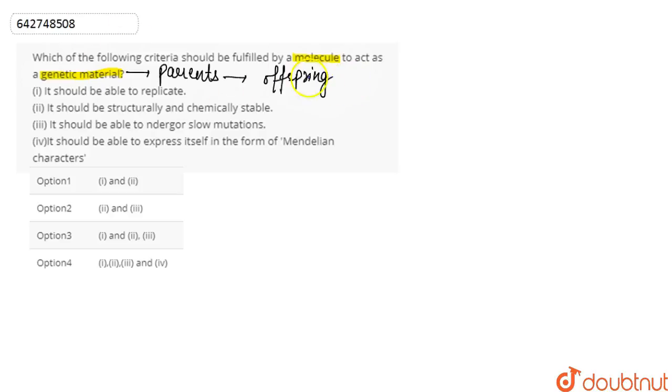Genetic material is basically of two types - it could be RNA in some organisms and it can be DNA in some other organisms. The number one criteria is that it should be able to replicate.